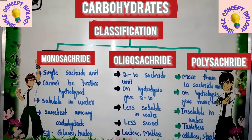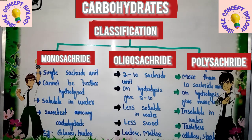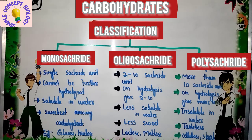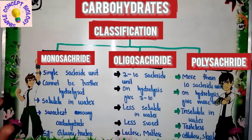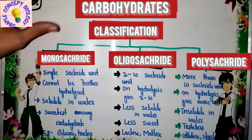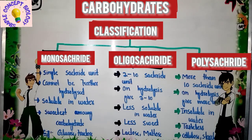Hi students. In this video lecture we will talk about the classification of carbohydrates. In the previous lecture I talked about the introduction of carbohydrates. Now, what is the purpose of classification? Why do we classify things? We classify things mainly for easy understanding. That's why we classify things, and similarly carbohydrates have also been classified into three categories. What is the main criteria for this classification?